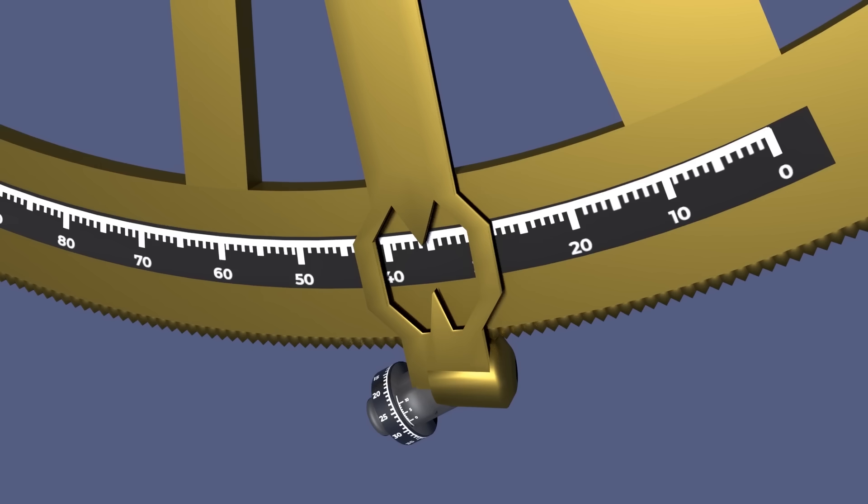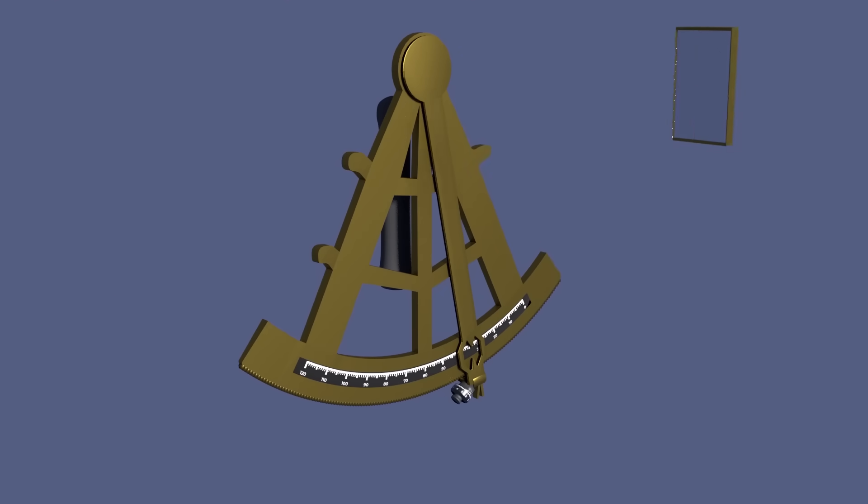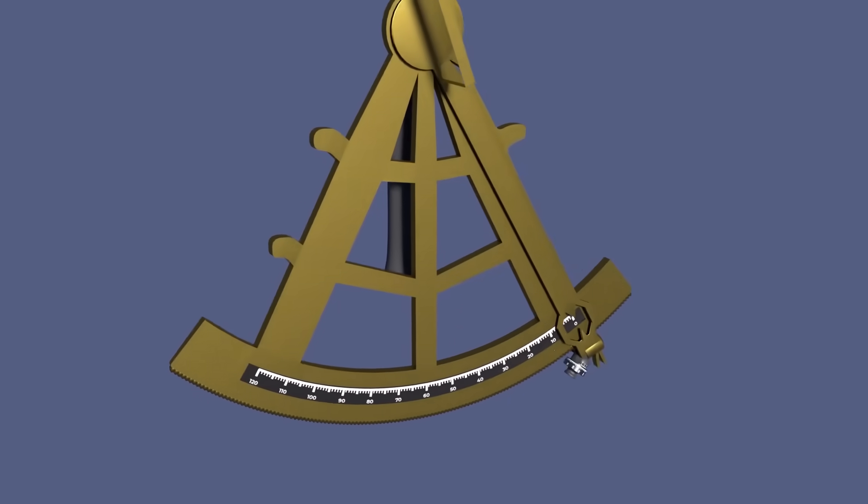Next to the vernier scale is a clamp, used to release the scale so the index arm can move freely. You'll need to release the scale using the clamp when taking a sight, but we'll cover that in the third video. The mirror attached to the index arm is the index mirror. It's attached rigidly to the arm, so it moves as the arm rotates, and the scale relates to the angle of the index arm and consequently this index mirror.